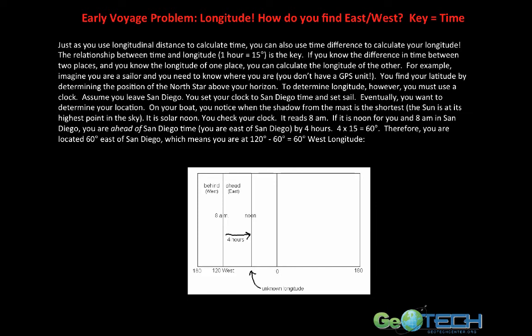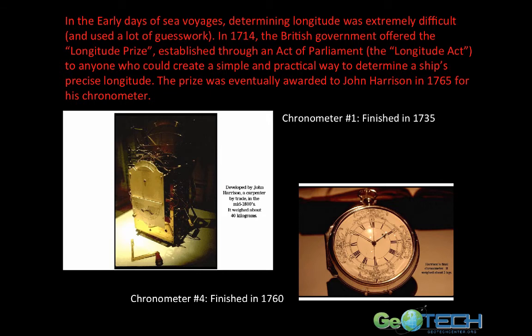Imagine you're seafaring 400 to 500 years ago and you need to know your longitude. You know that using a clock would be extremely beneficial, but your clock is either a sundial or a pendulum clock — neither one is going to be particularly useful. This was such a problem that in 1714, the British government offered the Longitude Prize, established through an act of parliament called the Longitude Act, to anyone who could create a simple and practical way to determine a ship's precise longitude. The prize was eventually awarded to John Harrison in 1765 for his chronometer. Chronometer number one, finished around 1735, weighed about 40 kilograms. Chronometer number four, finished in about 1760, weighed about two kilograms. In fact, the modern day wristwatch you're wearing today probably has a lot to do with the work of John Harrison in the mid-1700s.